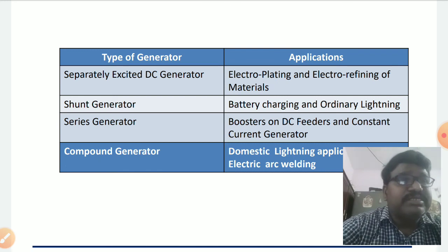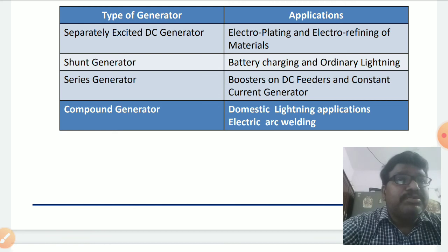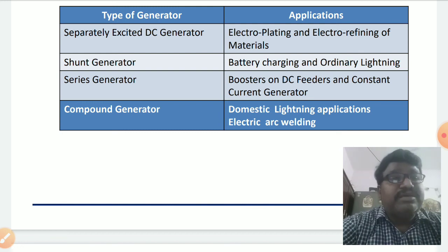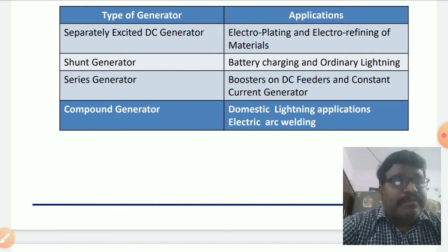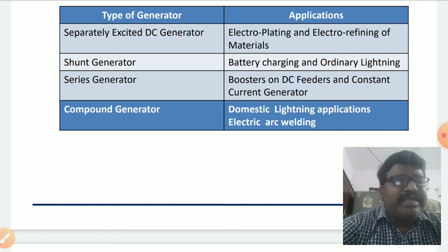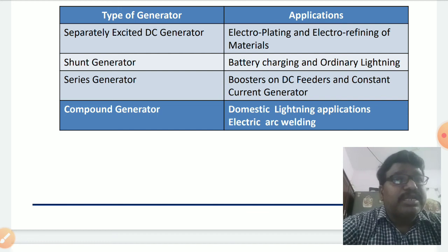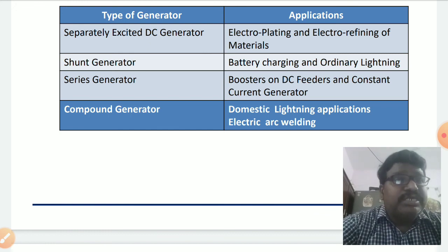The third type is the compound generator, which is classified based on the flux produced in the series field winding and the shunt field winding. If both the series field winding and shunt field winding fluxes are additive in nature, it is called a cumulatively compound generator. If the flux produced in the series field and shunt field windings are in opposite directions, it is called a differentially compound generator.